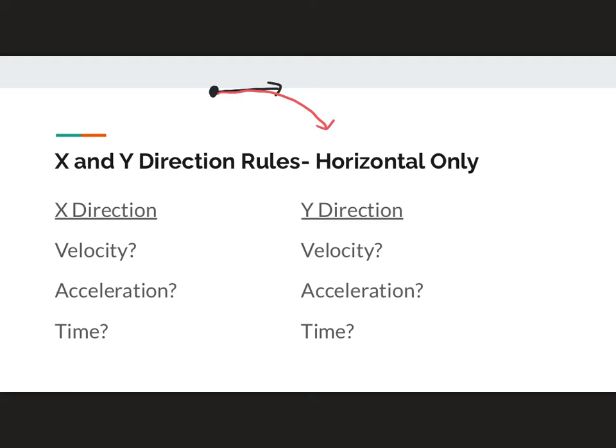First of all, I have a velocity in the X direction. However, I have no velocity in the Y direction. It's only being launched to the right. Acceleration in the X direction, I don't have gravity or anything, so it's zero. But in the Y direction, as we saw before in 1D motion, I will have acceleration, and that's gravity.